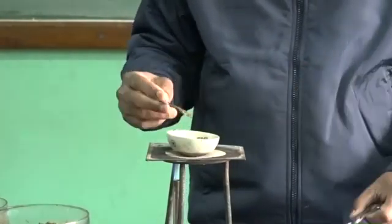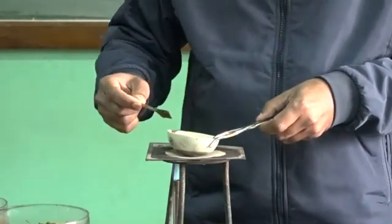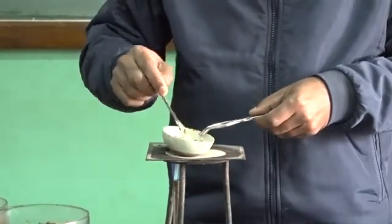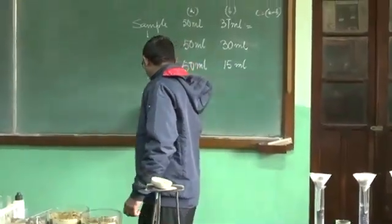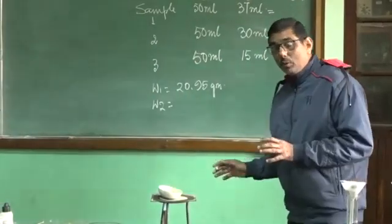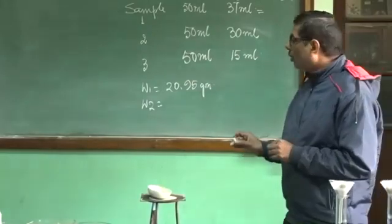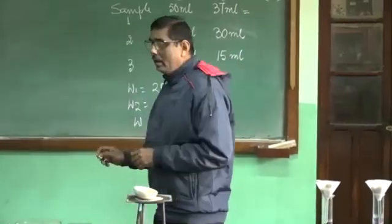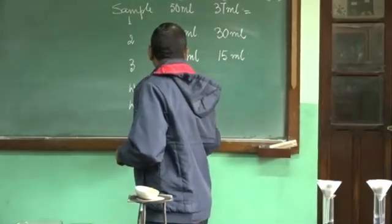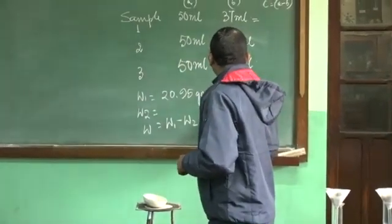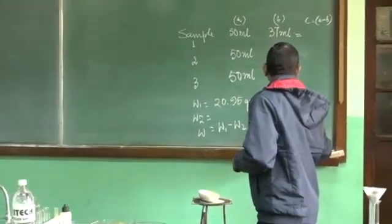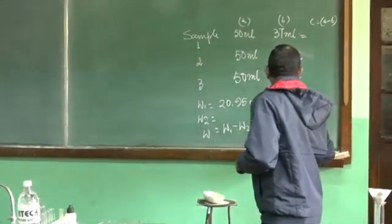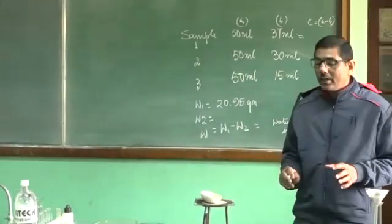It will take some time so that all the moisture present in the soil gets removed. When all the moisture content has been removed, you weigh it again to get W2. W2 will obviously be less than W1. The moisture content W equals W1 minus W2 — this gives you the amount of water present in the soil. This is how you do this experiment.